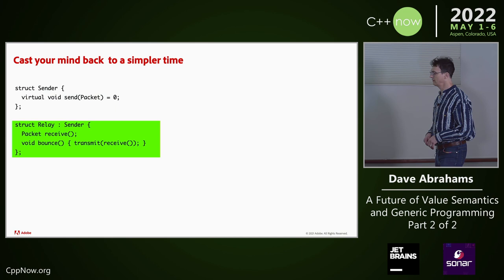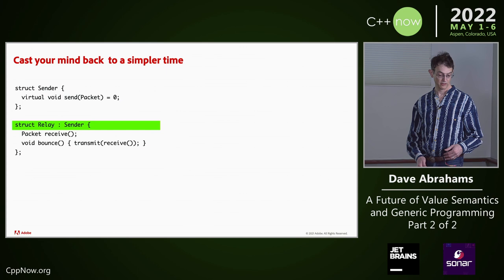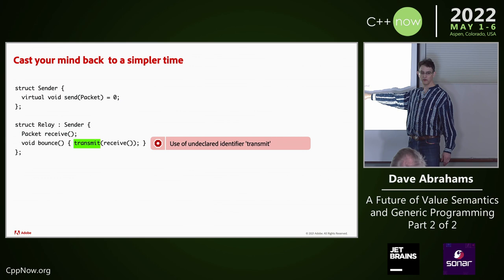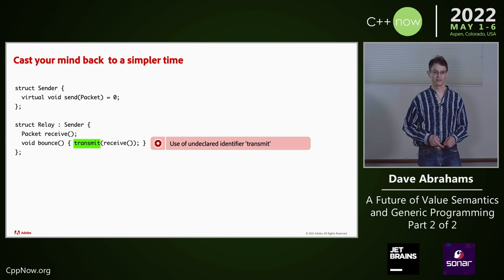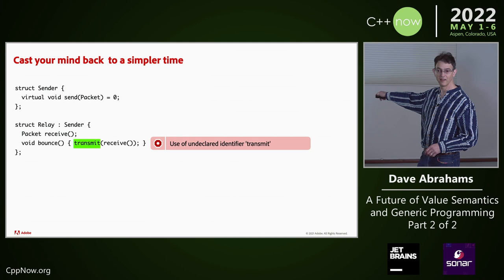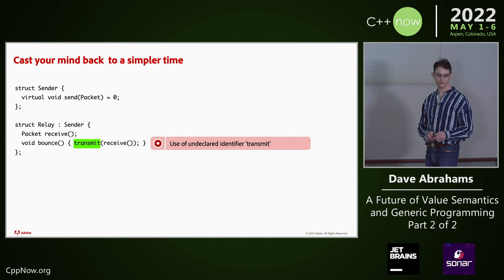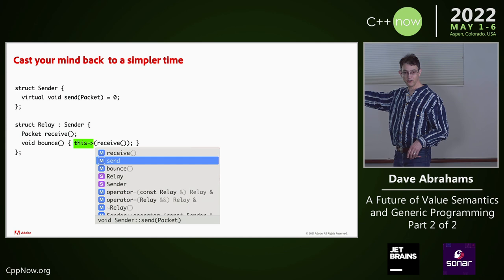When it wasn't too much trouble to explicitly declare the interfaces that you intended to implement — the compiler could tell you when your implementation of those interfaces was lacking. This is C++ code. Do you guys program like this these days? But not when you're doing generic programming — you don't get this experience from generic programming. The compiler might even decide to help you with some suggestions if you have a fancy IDE.